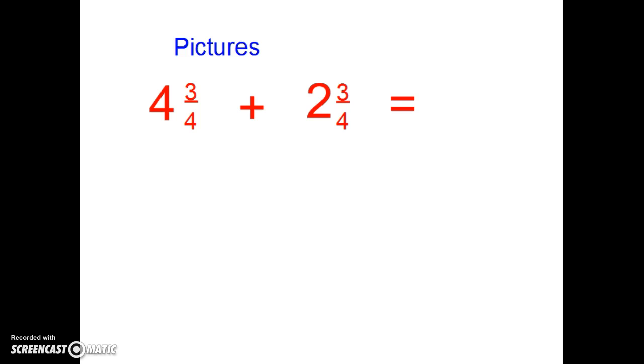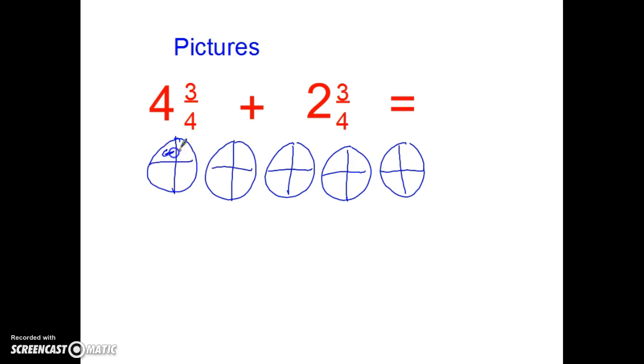Next method is pictures. So I see I have 4 and 3 fourths. So I'm going to start by shading in my 4 and 3 fourths. I'm not shading all the way in, just to save a little bit of time. So there's my 4 whole ones and 3 fourths of 1. I'm going to switch colors. And I also have 2 and 3 fourths. Here's my 2 and 3 fourths. Shade in 2 whole ones. There's 1 whole one, 2 whole ones, 3 fourths of 1.